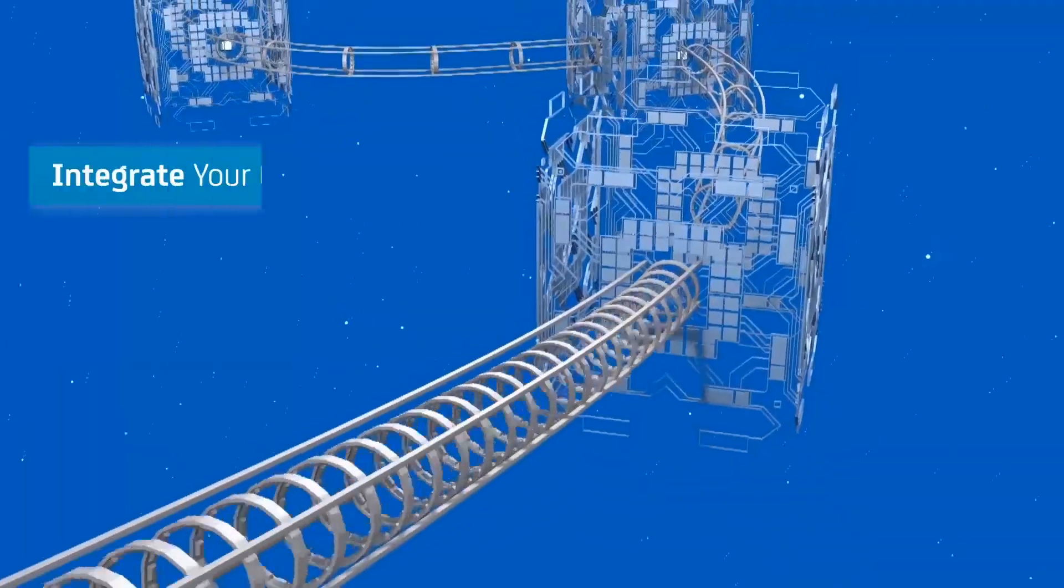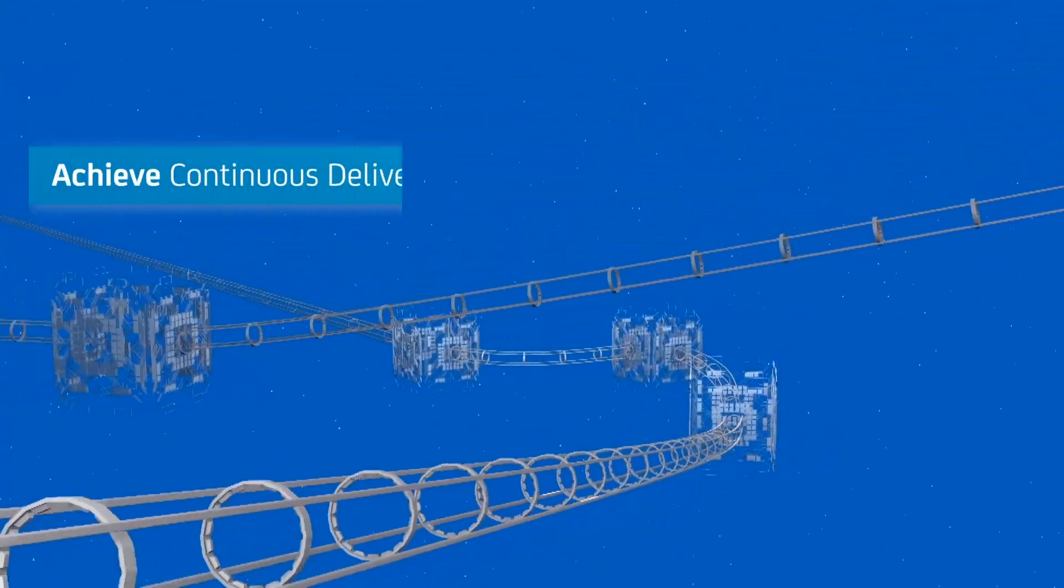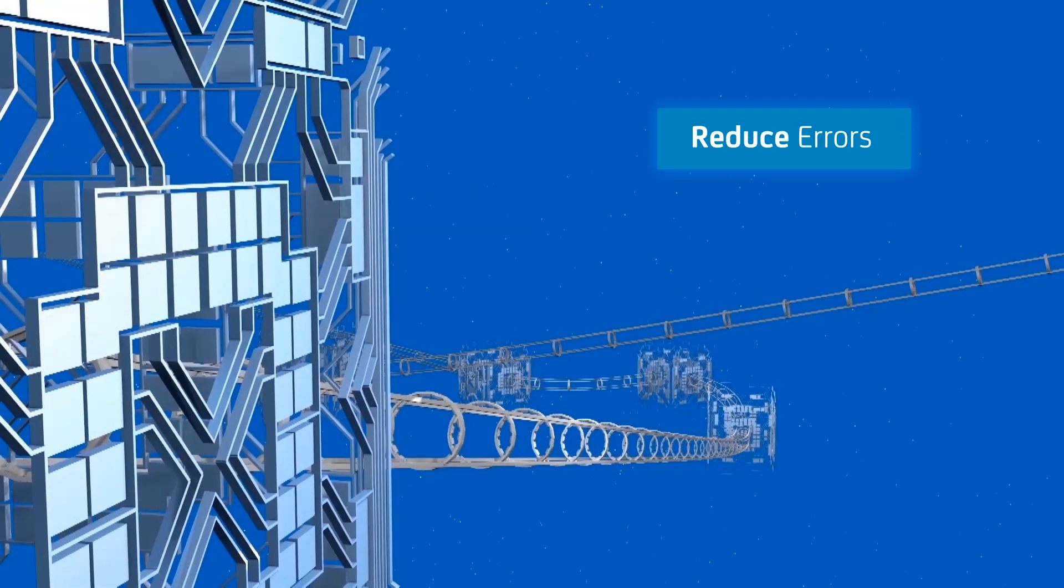Automating manual processes is what CA release automation is all about. Integrate your entire application delivery chain, increase release capacity and achieve continuous delivery. You'll reduce release errors and improve visibility to every step of the process.